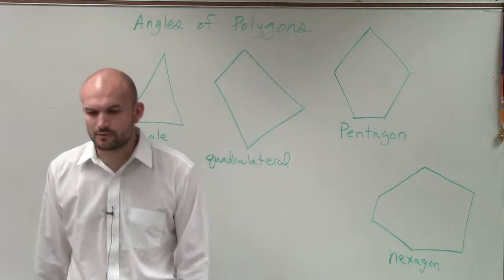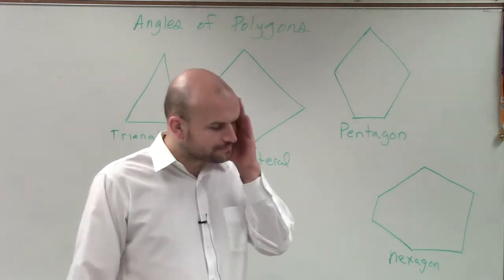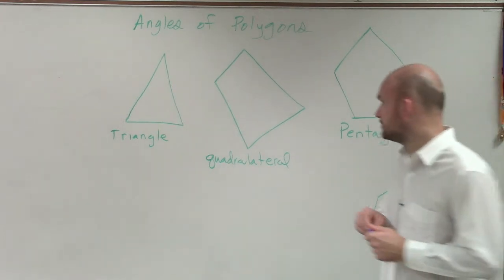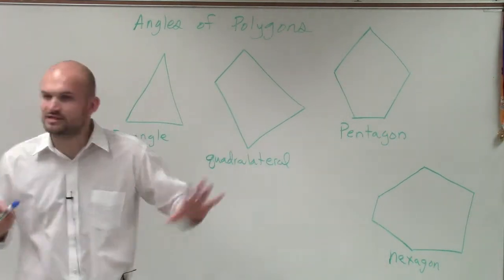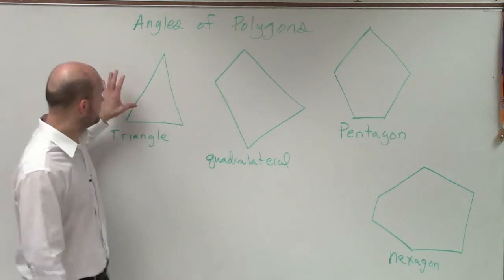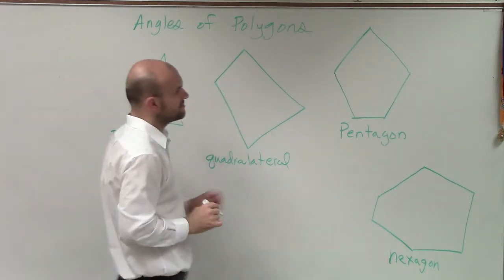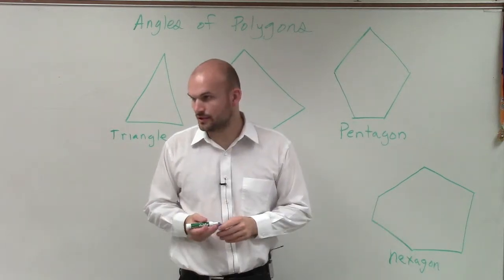So now later in this class, ladies and gentlemen, we will talk about more shapes and larger polygons. But for right now, let's just take a look at at least the first four as far as starting with polygons with three sides, four sides, five sides, and six sides. OK?